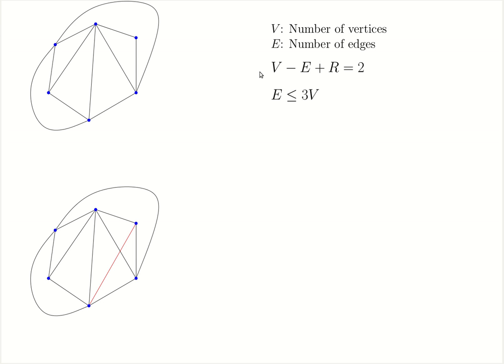I will not go into the proof of this lemma. However, you can use Euler's theorem which says V minus the number of edges plus the number of regions equals two to derive this inequality. This inequality will give us an easy bound on the number of crossings. And it says the number of crossings is at least E minus three times V.